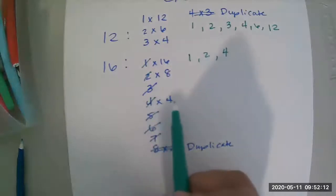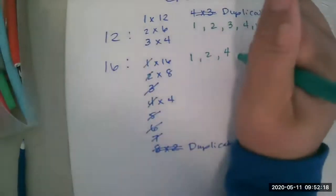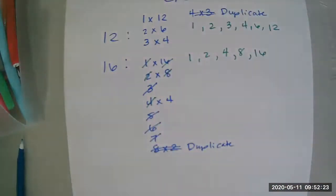And I don't have to list both 4s. I'm just going to list one of the 4s. No 5, no 6, no 7. There's an 8. And there's a 16. Okay? So just go ahead and make sure you've listed them all.